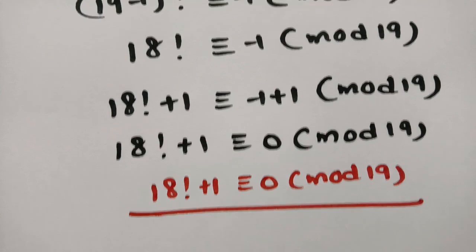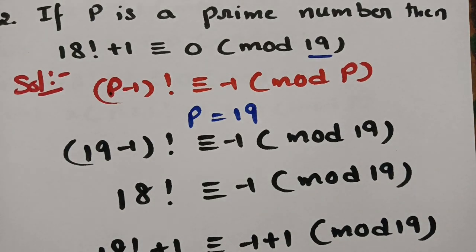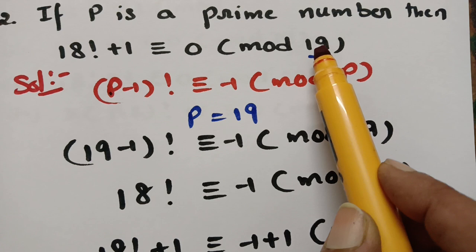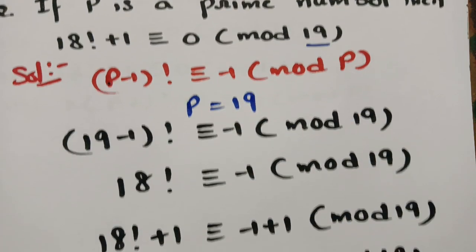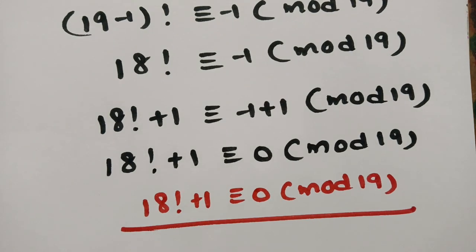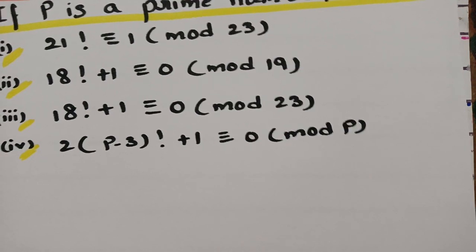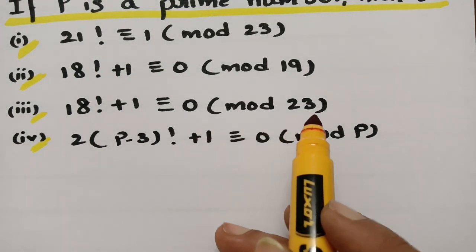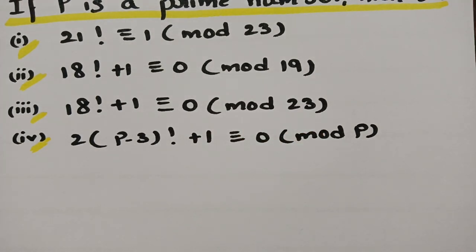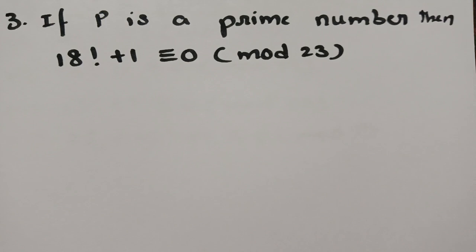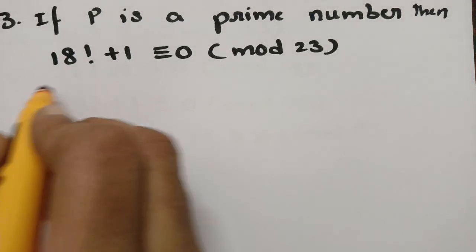This is the second solution — also very simple. In Wilson's theorem, taking the prime number as 19 and adding 1 to both sides gives 18! + 1 ≡ 0 (mod 19). The third question is: 18! + 1 ≡ 0 (mod 23). If P is a prime number, show that 18! + 1 ≡ 0 (mod 23).